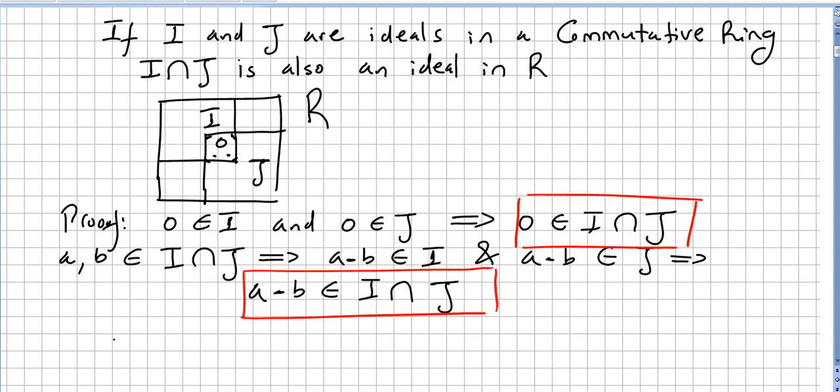Now let us pick an element A here in intersection and one element R here in the ring. So if A is an element in the intersection of ideals and we pick an element R from the ring, that means that RA will be here.